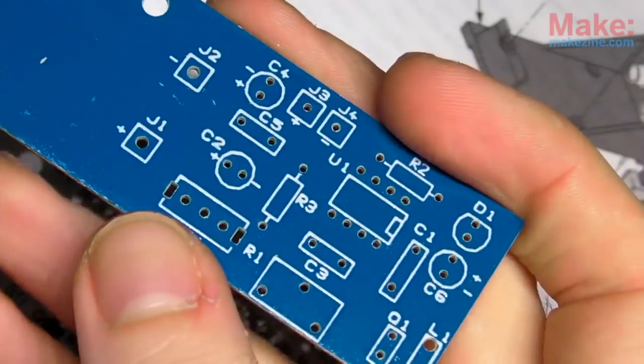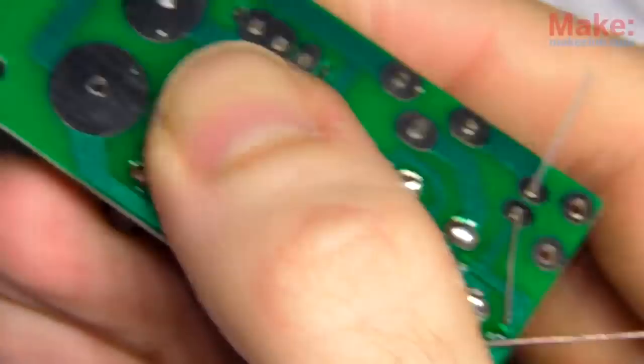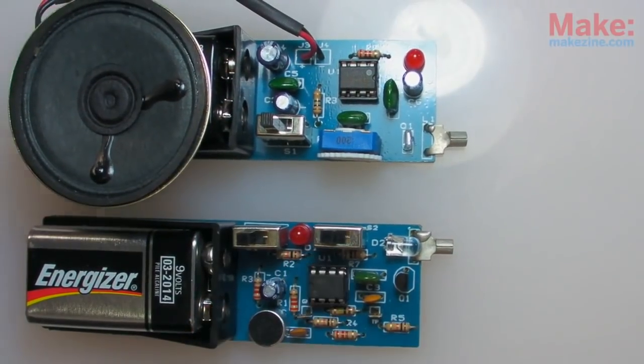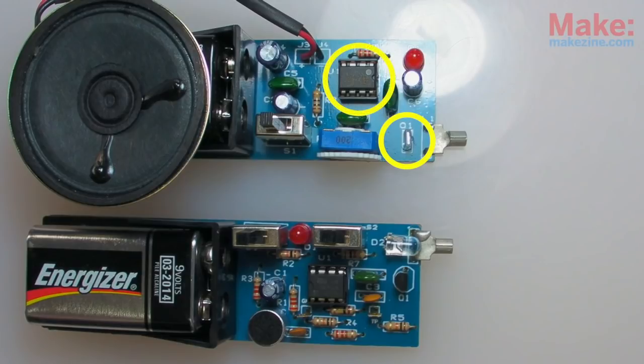The receiver module does just the opposite, converting light back into electricity. In this case, our receiver senses changes in light using a phototransistor. The phototransistor's output is then amplified and sent through a small speaker.